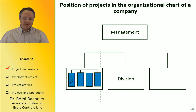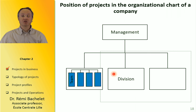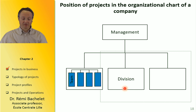So what about projects in business? What you have here is the typical organizational chart of a company. You have the management of the company, which cares about, for example, the strategy of the company. And then you have a series of divisions — for example, factories — and inside these divisions, you have work teams.